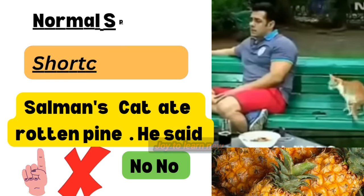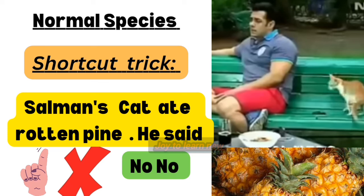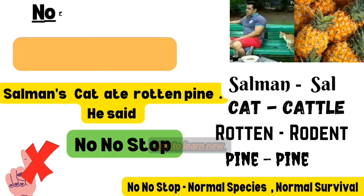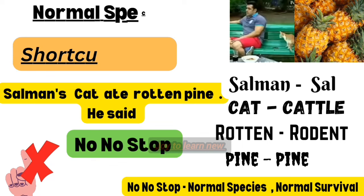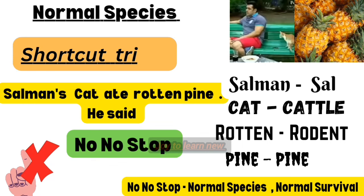Normal species. The shortcut is: 'Salman's cat ate rotten pine and he said no no stop.' Take the word Salman — S-A-L — it represents Sal.